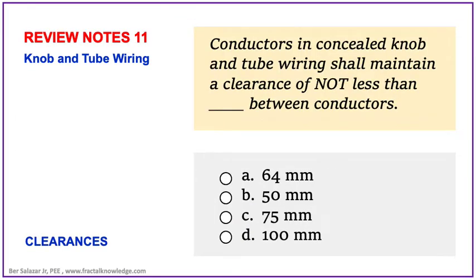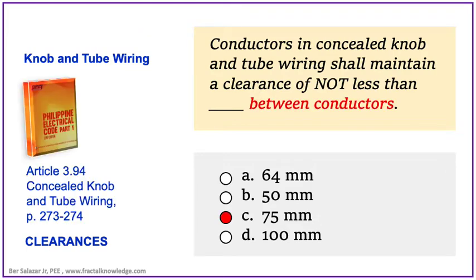Another example problem related to concealed knob and tube wiring asks: what is the clearance between conductors that shall be maintained? The answer can be found in 2017 PEC Article 3.94, page 274. The correct answer is 75 mm clearance between conductors. Remember, for concealed knob and tube wiring, the keyword here is 'between conductors.'